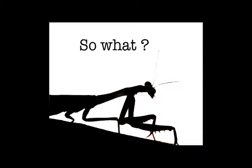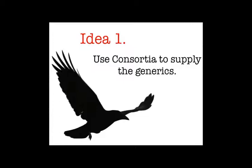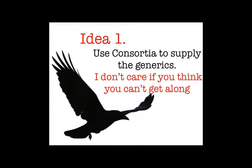In the next few minutes I'll go quickly through some of the so-whats as a result of what I've been saying. The first thing is: we should be using consortia to supply the generics, and I don't care if you think you can't get along — we have to. Things like those 500 copies of Harry Potter distributed across Queensland libraries — there's no reason they can't be done through a generic supplier. There will be generic bestsellers that every library user wants delivered in print. Same with e-content — there has to be a consortium for e-content if we're actually going to associate in our users' minds that libraries are a site for getting e-content, and if we're not going to be divided and conquered by publishers.